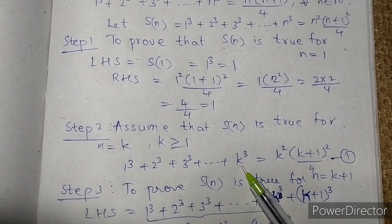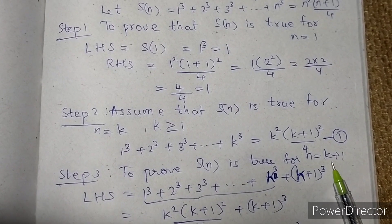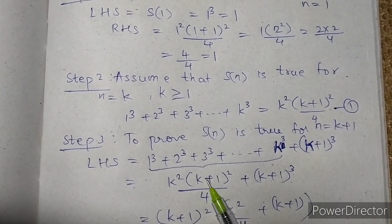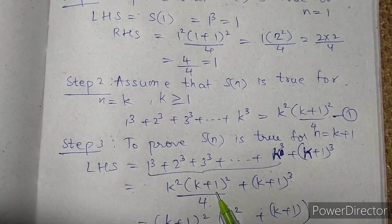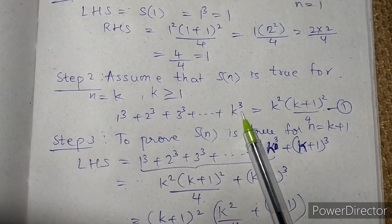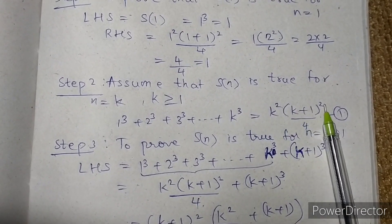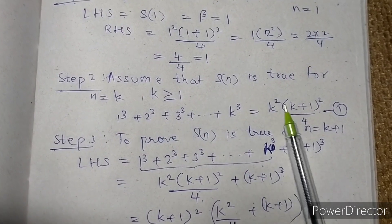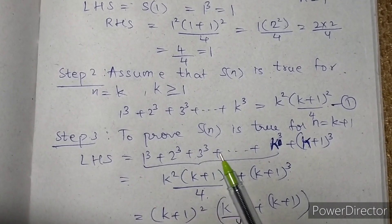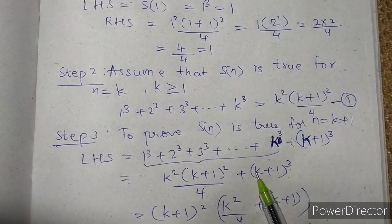In step 2, our last term was k³ — that was for n = k. Now for n = k+1, we need to prove: 1³ + 2³ + ... + k³ + (k+1)³ equals k² × (k+1)² divided by 4. Since we are assuming the inductive hypothesis is true, we can replace 1³ + 2³ + ... + k³ with k² × (k+1)² divided by 4, giving us k² × (k+1)² divided by 4 plus (k+1)³.